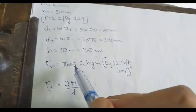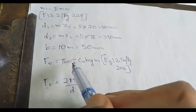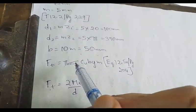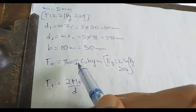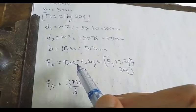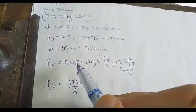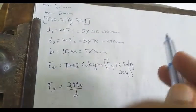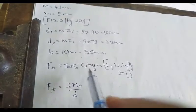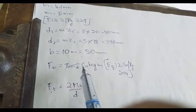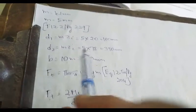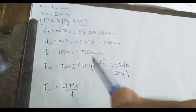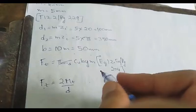As done in the previous session, if the value of σd is less than the allowable stresses assumed at the start of the problem, then the design is safe. Otherwise we need to change the module. So we shall check for the design.